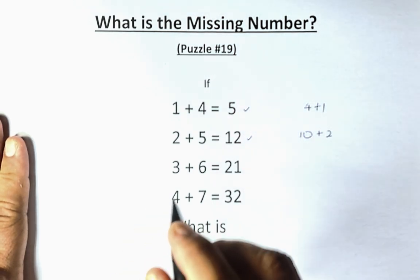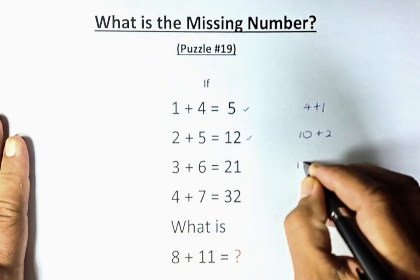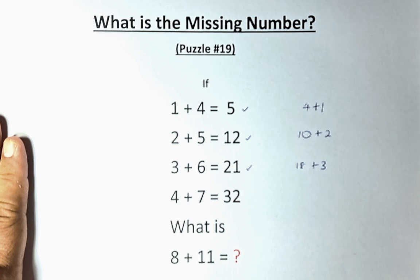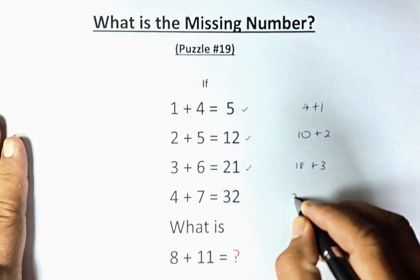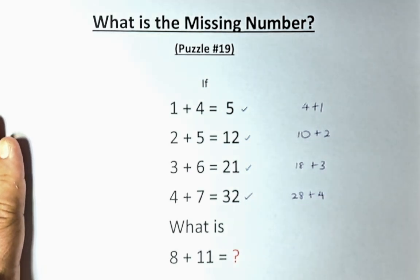Third row, 3 plus 6 equals 21. So 3 multiplied by 6 is 18, plus the first number which is 3, and that will give us 21. The fourth row is going to be the same: 4 times 7 is 28 plus 4, and that will give us 32.